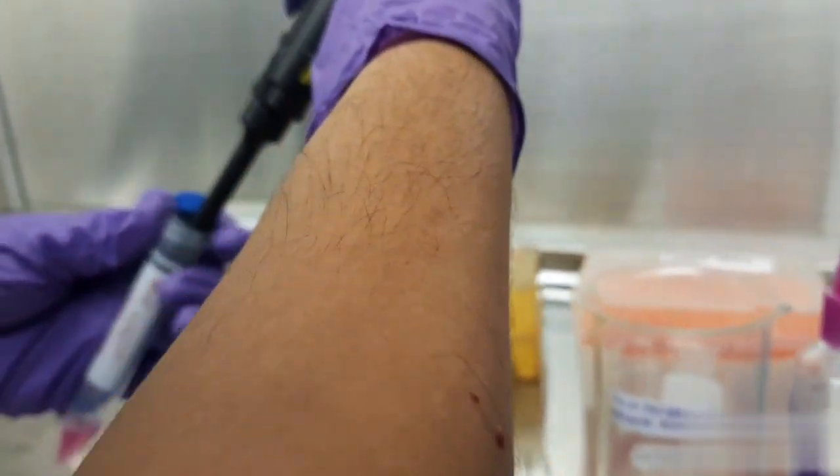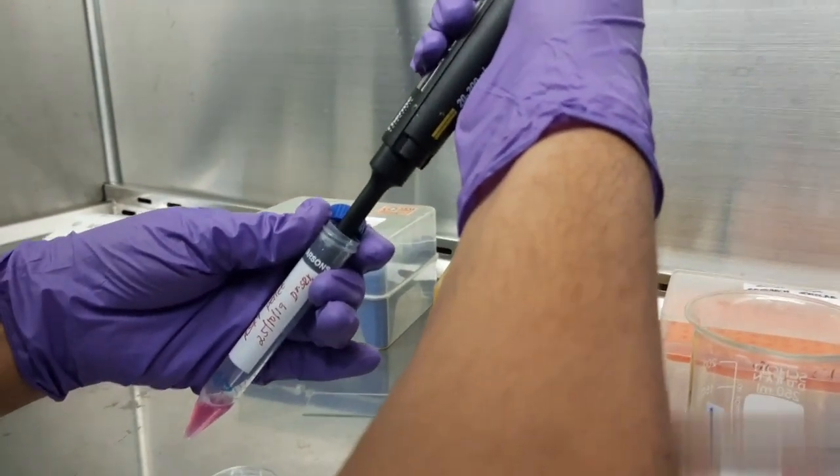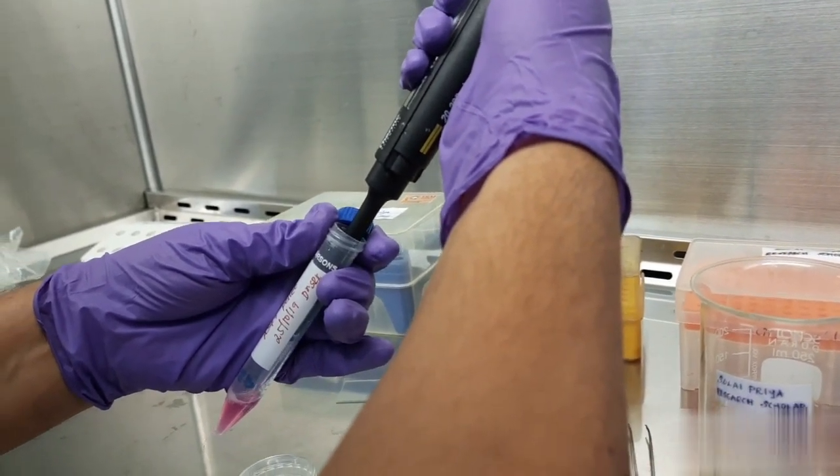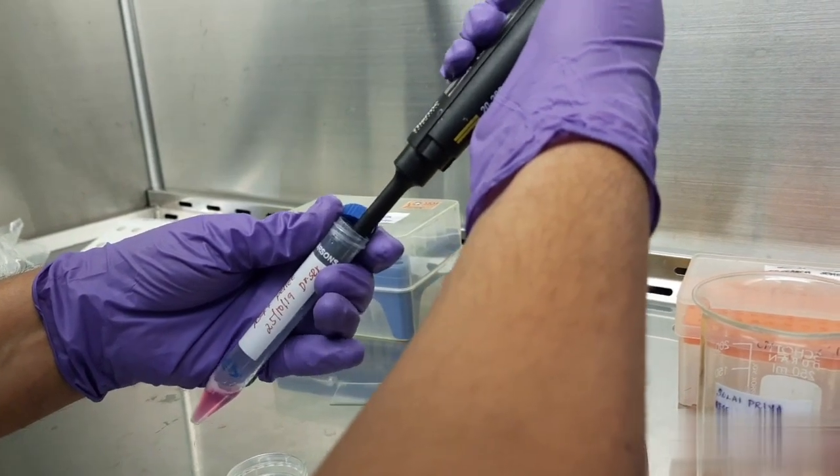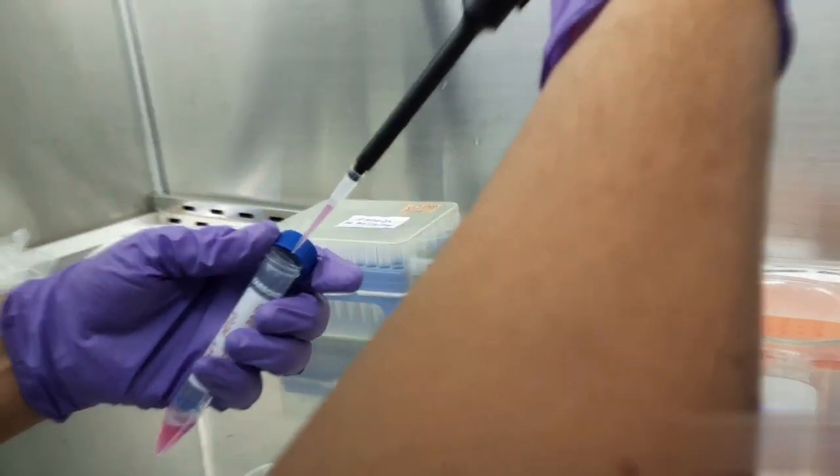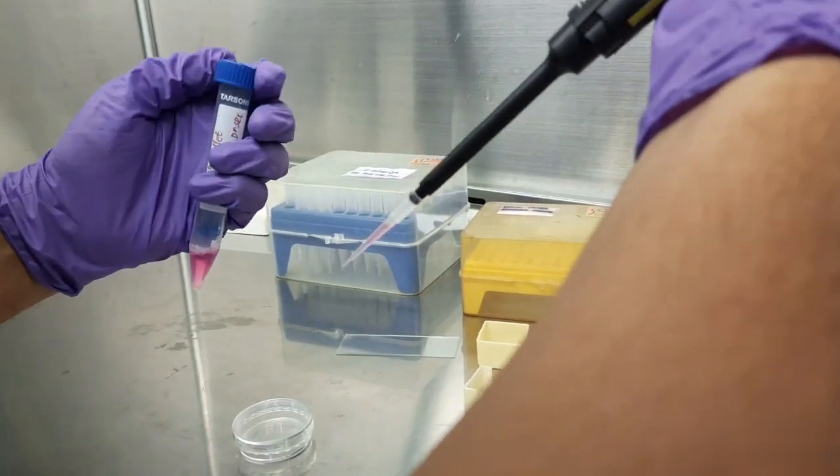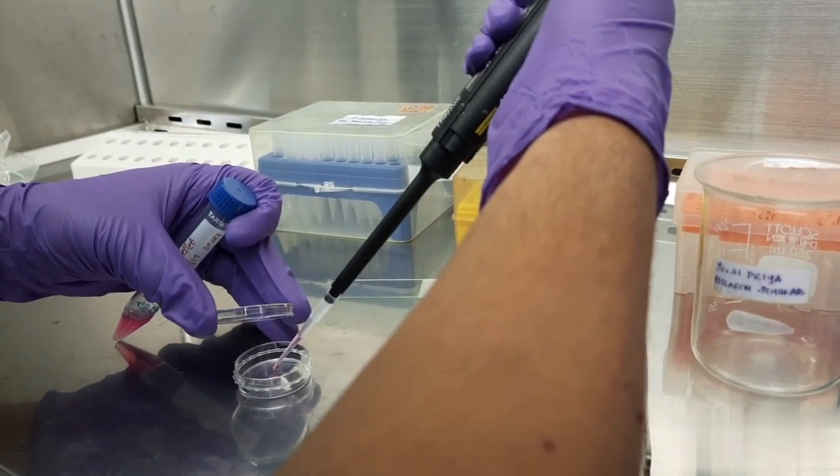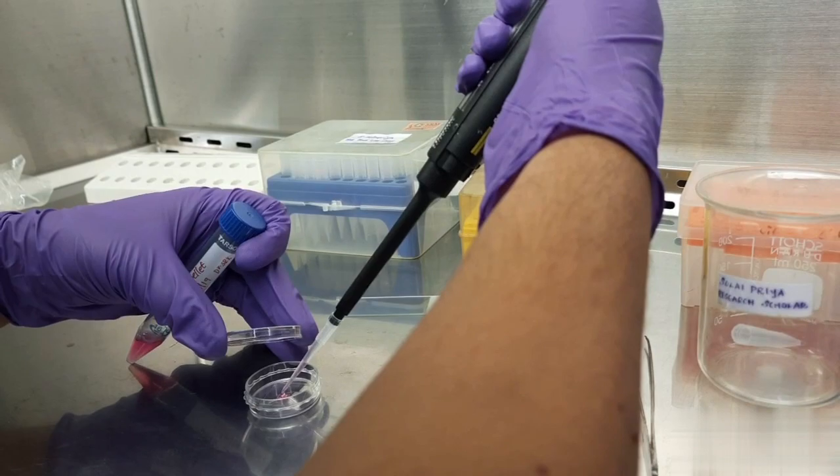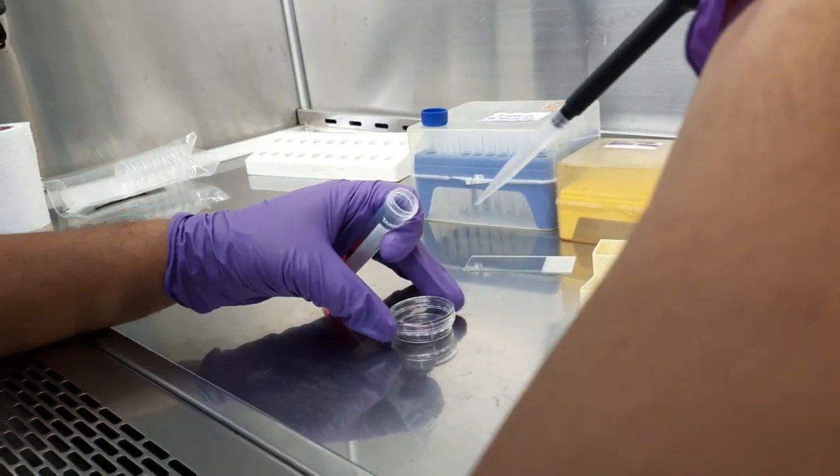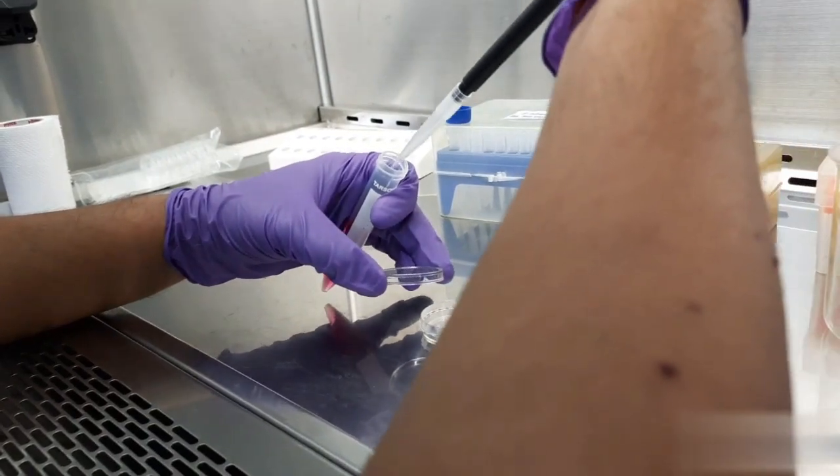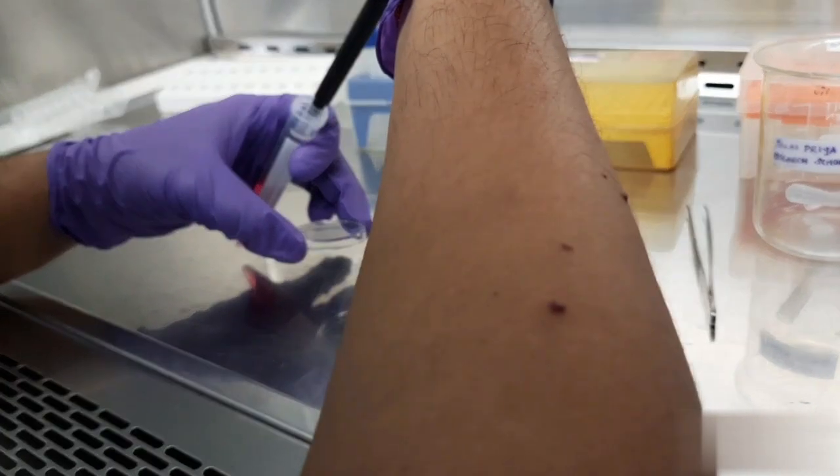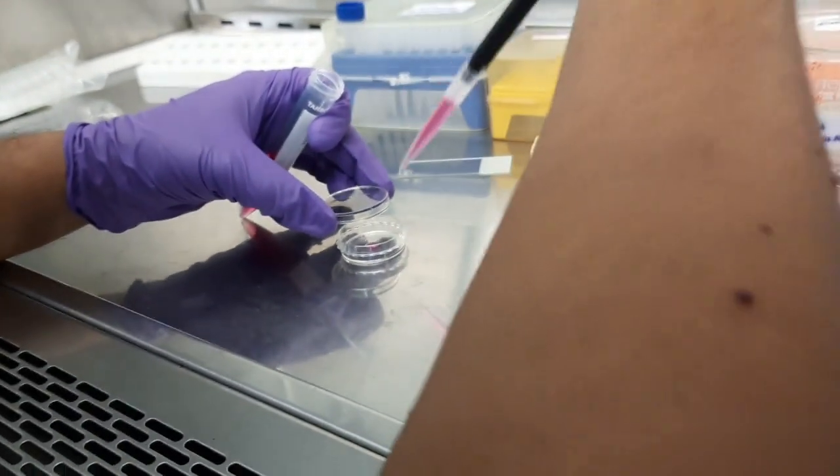Take 500 to 1000 cells and seed onto the cover slip. Here I am going to take 50 microliters of cells. I am going to add 2 ml of the prepared DMEM media.